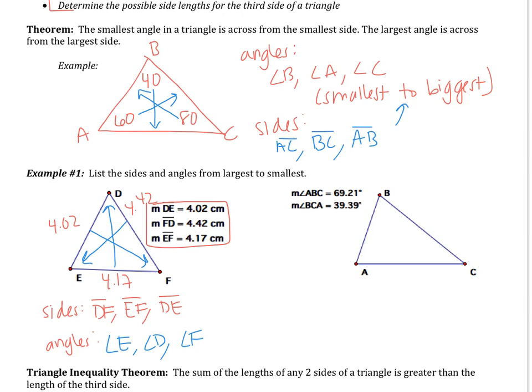Please pause the video and try the next example on your own. Come back when you are finished. For this example, the first thing you should have done is mark your angles. Angle ABC is 69.21 degrees.